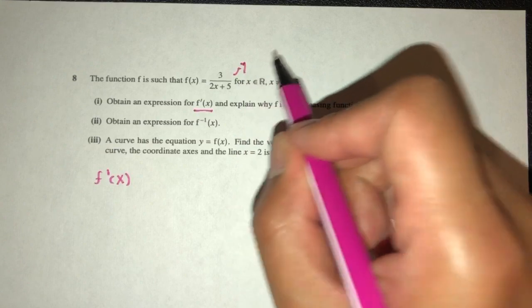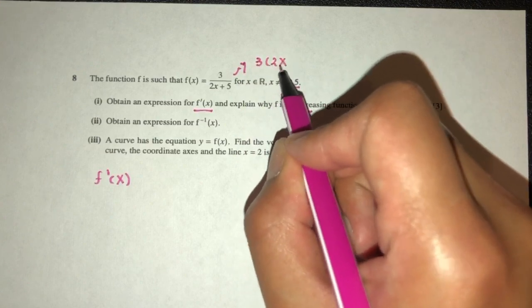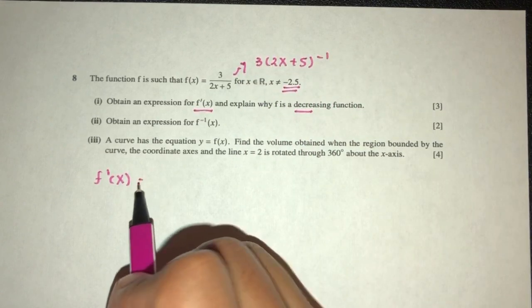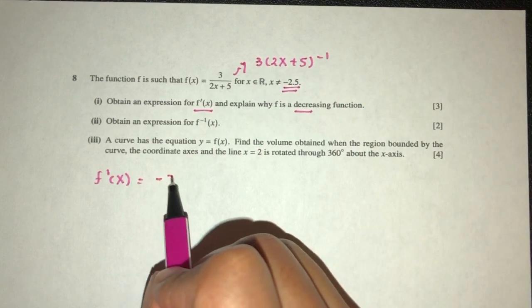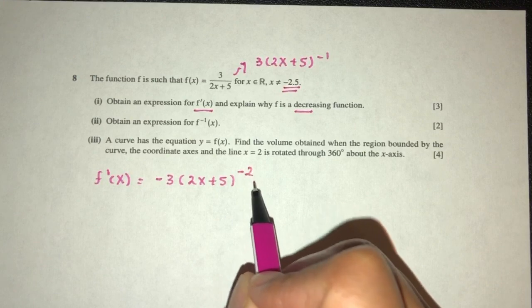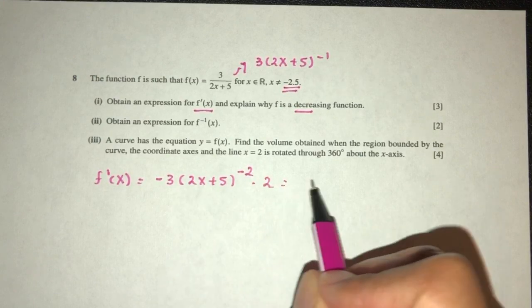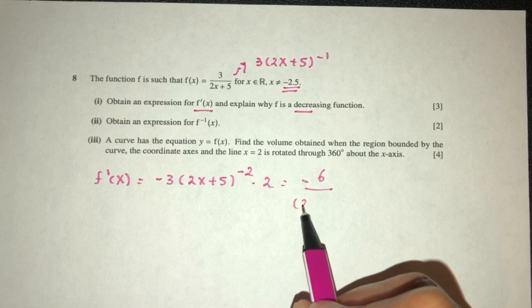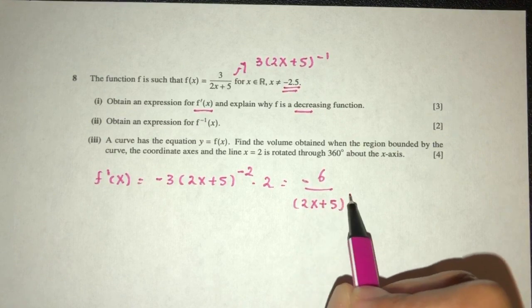Now we understand we can rewrite this as 3 times (2x plus 5) power minus 1. So first, multiply by the power which should be minus 3, times (2x plus 5) minus 1, that should be minus 2, multiplied by d by dx of the inside, that should be 2. So you have minus 6 over (2x plus 5) power 2.